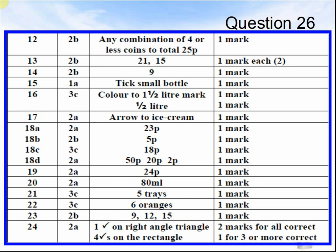Question 23: 9, 12, 15. Question 24: 1 tick on the right angle of the triangle in the corner, and 4 ticks on the rectangle.